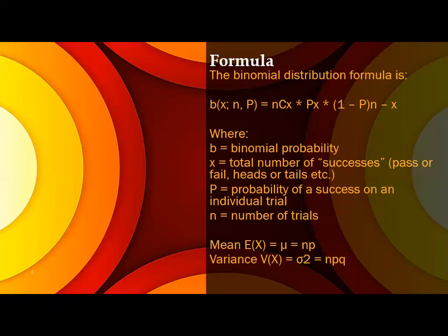And P^x, P^x in the sense probability of success power x. x is already explained. And 1 minus P will be the failure probability power n minus x.